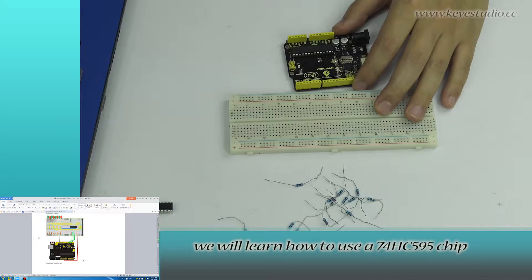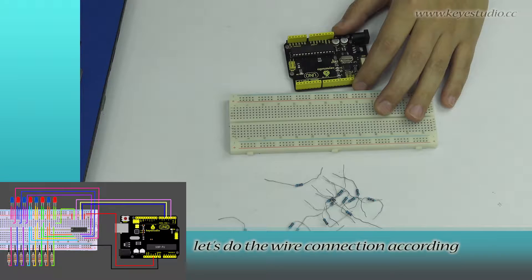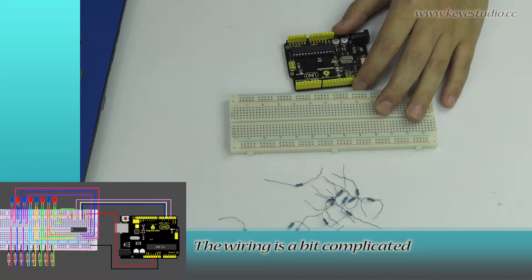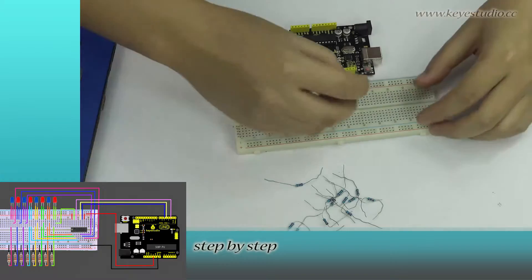In this lesson, we will learn how to use a 74HC-595 chip to control 8 LEDs. First, let's do the wire connection according to the connection diagram. The wiring is a bit complicated. Let's follow our lead and connect the wires step by step.